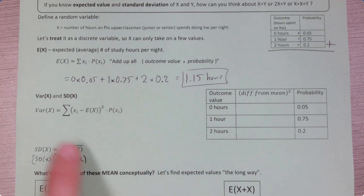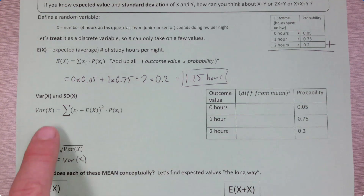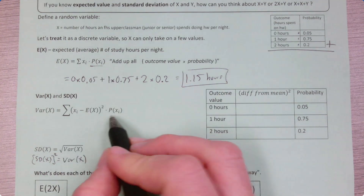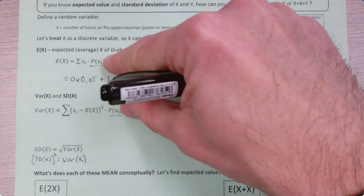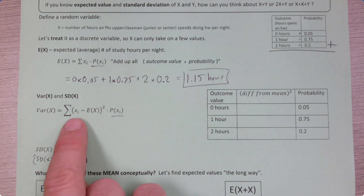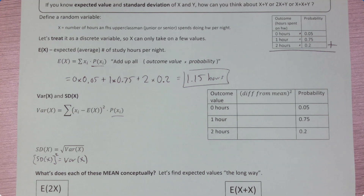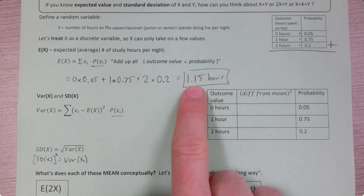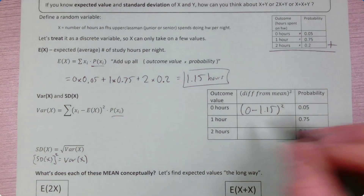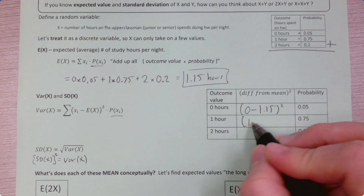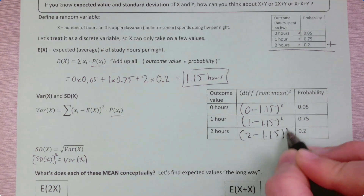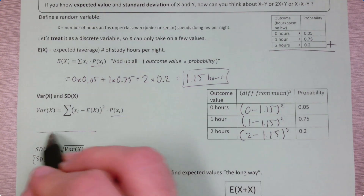Let's work our way down. If we're going to compute the variance, notice how close these equations are. I've got a probability of an outcome in both. For expected value, I'm multiplying the probability by the outcome itself. For variance, I'm multiplying it by the difference between that outcome and the expected value, squared. So if the expected outcome is 1.15 hours, the squared differences would be: (0 − 1.15)², (1 − 1.15)², and (2 − 1.15)².